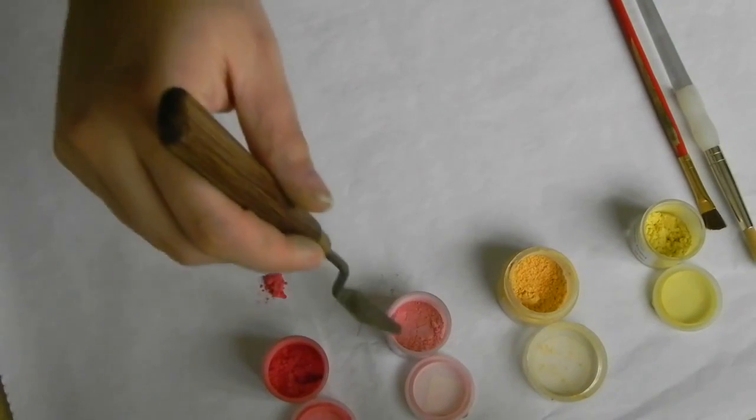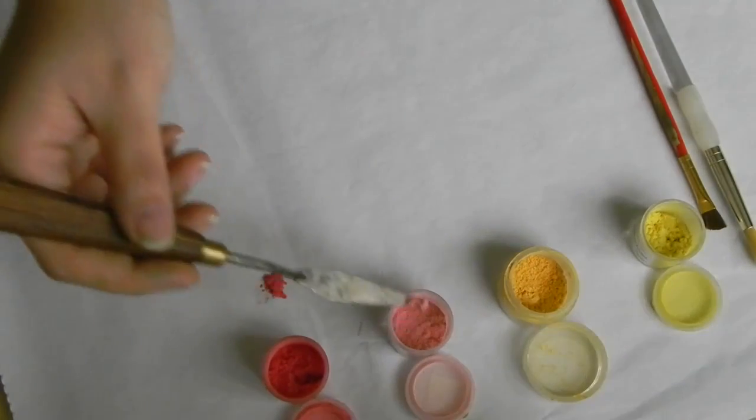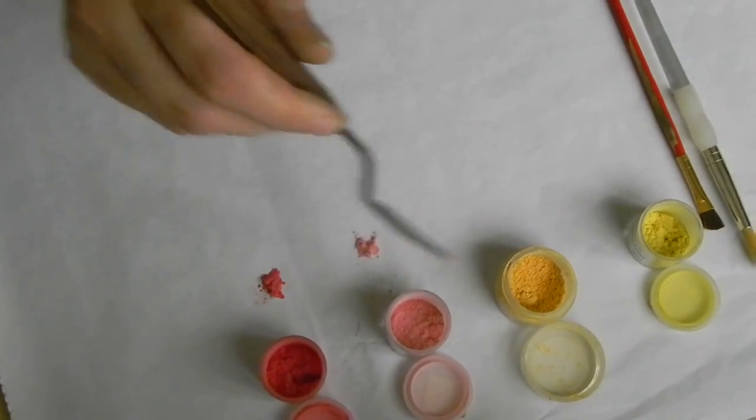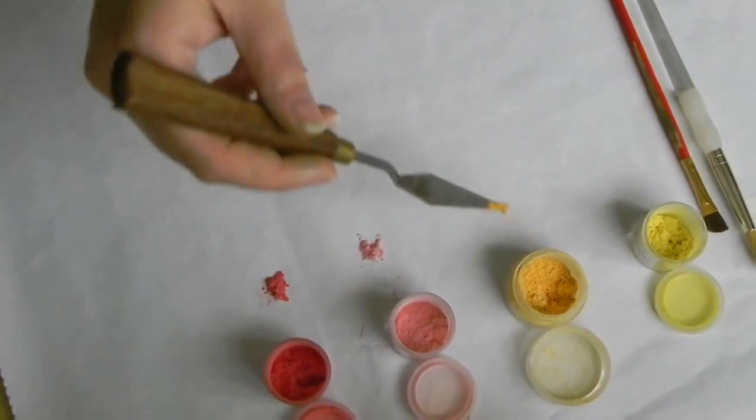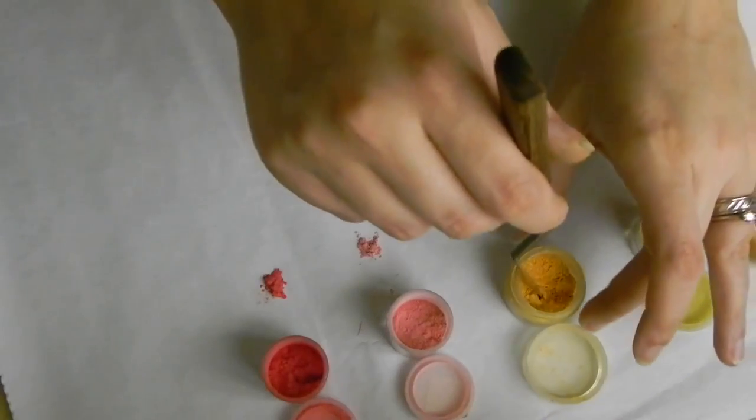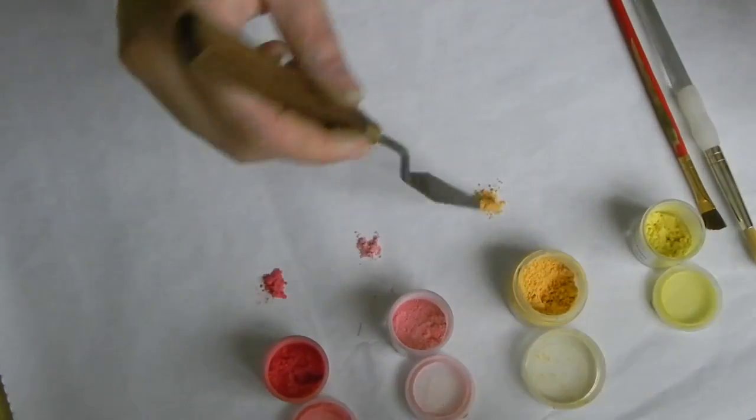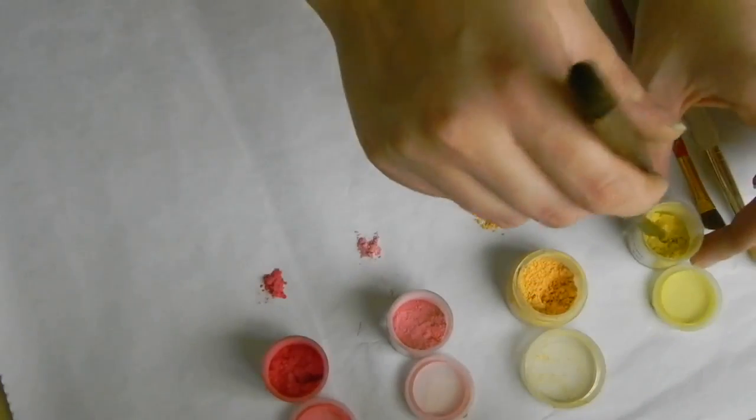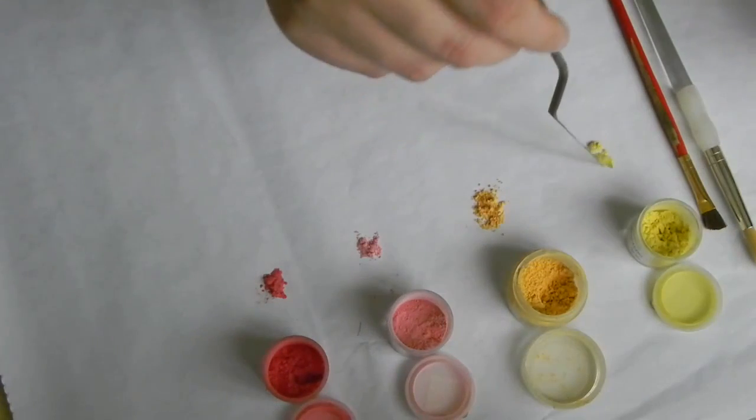I use my offset spat to pull out just a little bit of each one. Truly this stuff goes a long way. Don't take out too much. There is a way to save it and bring it back, but not always the most fun process to try and get them back in your little petal dust containers.